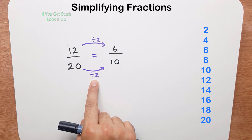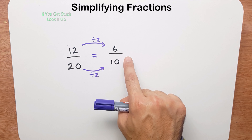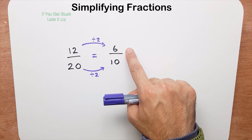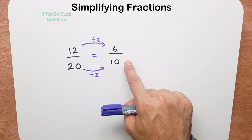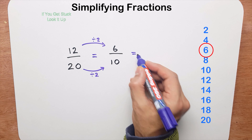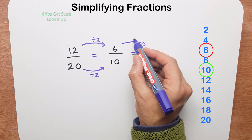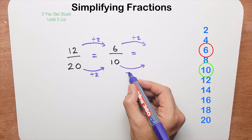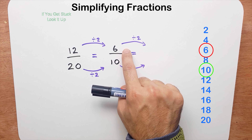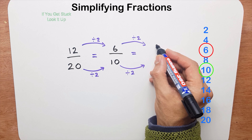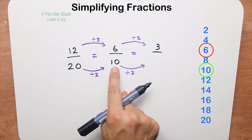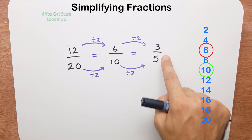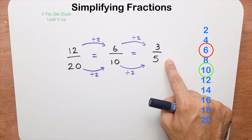Dividing by 2 is the same as halving. Now I ask myself: can I simplify this fraction further? Yes, because 6 and 10 are both in the 2 times table. So I divide the numerator by 2 and the denominator by 2. 6 divided by 2 is 3, and 10 divided by 2 is 5. I can't simplify 3 fifths any further, so I stop there.